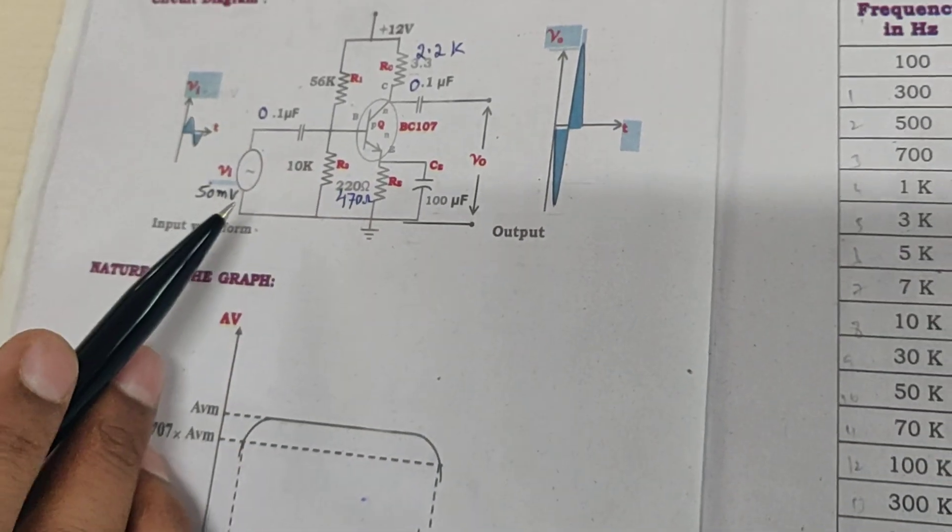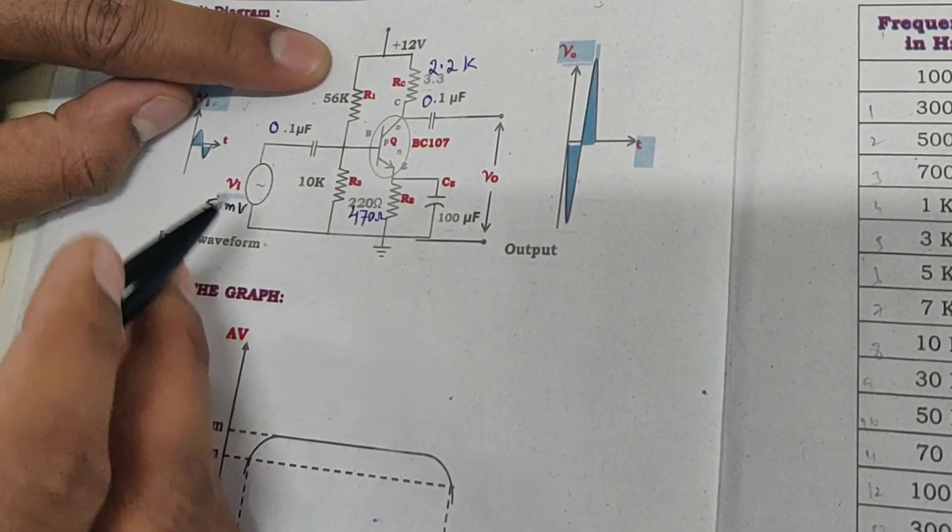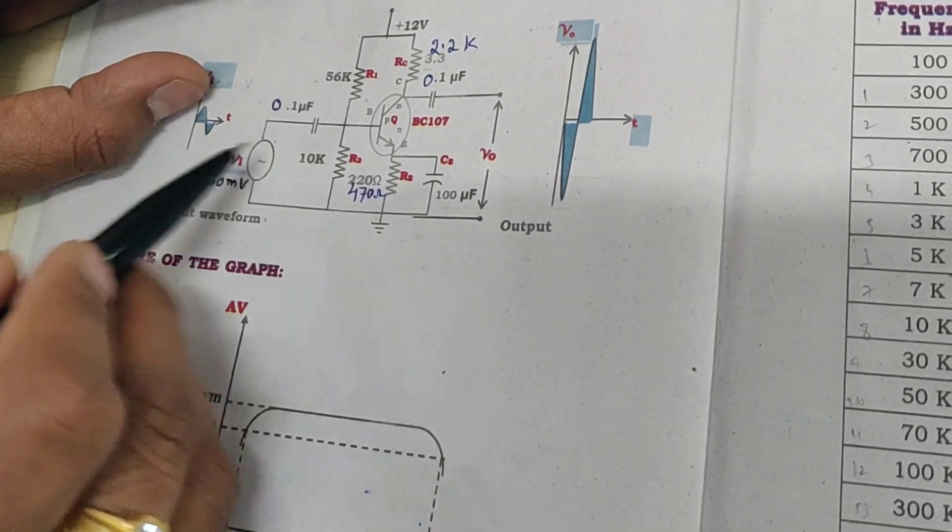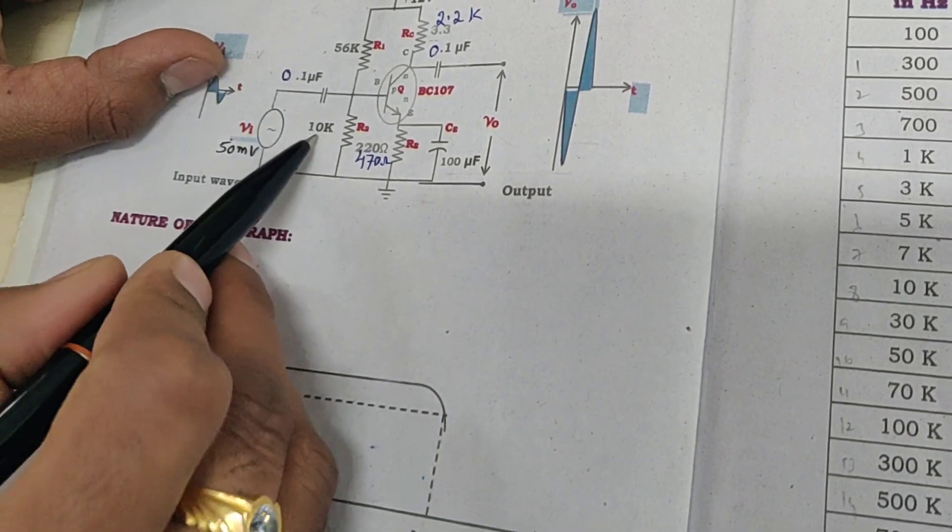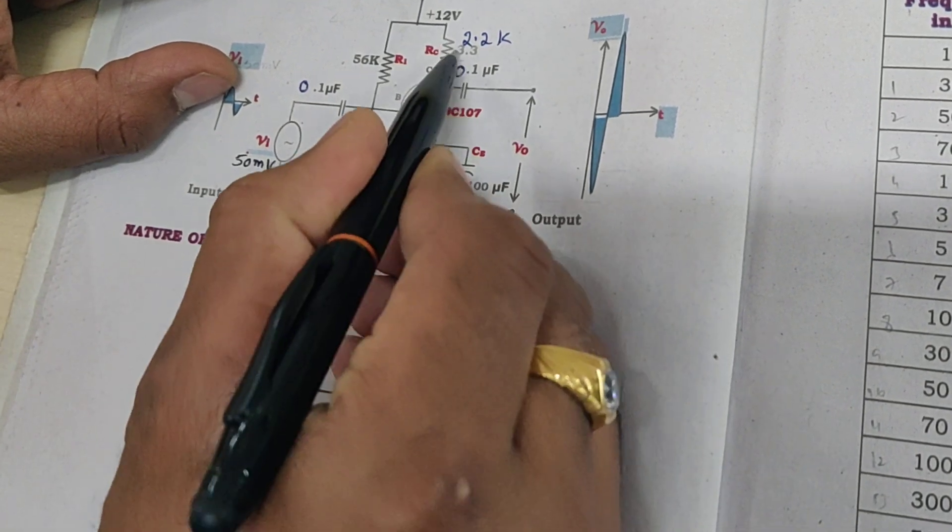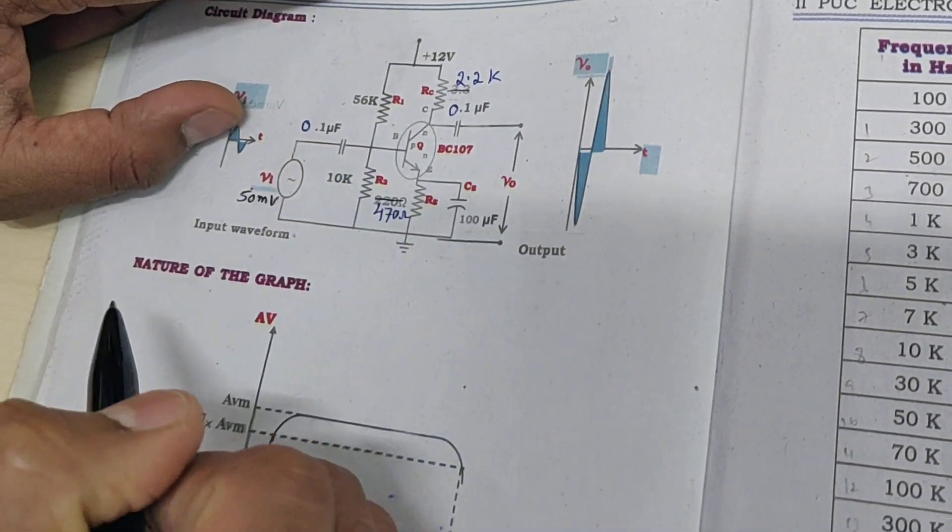We are doing a slight modification in components to obtain proper results. So we're using 56k, 10k. Instead of 220 ohm we are using 470 ohm, and instead of 3.3k we are using 2.2k.